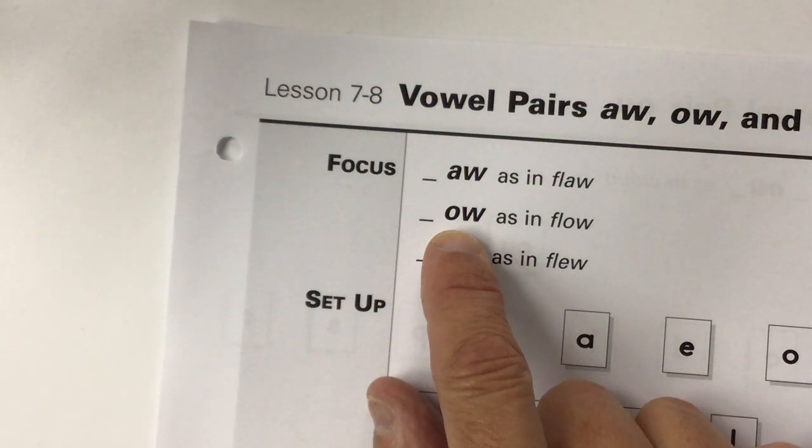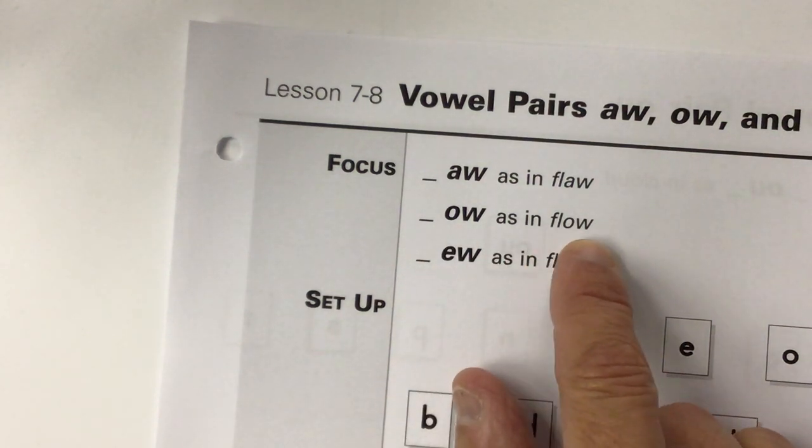Here's O-W that says oh, and that's in the word flow. Notice the O-W just says oh, the long O sound. Now you say this word.